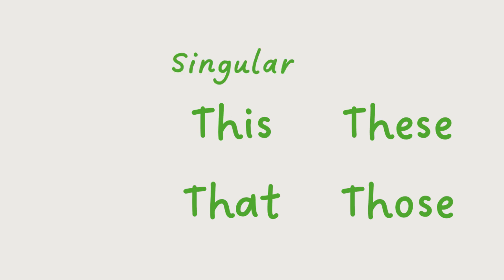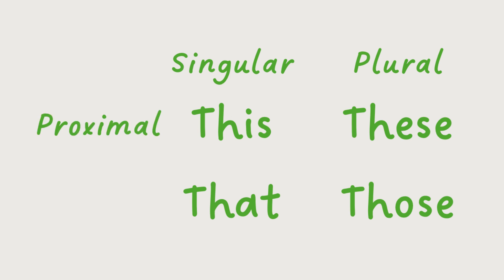In English, we have four so-called demonstratives. These are the words this, that, these, and those, which are used to verbally point to a certain thing. To help distinguish what we're pointing to, these words encode a couple of features items may have. 'This' and 'that' denote singular objects, while 'these' and 'those' are plural, denoting multiple objects. Additionally, the words indicate how far from the speaker the object is. 'This' and 'these' are proximal, indicating that the object or objects are close to the speaker, while 'that' and 'those' are distal, indicating objects further away.